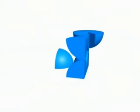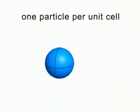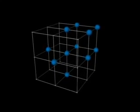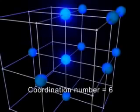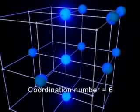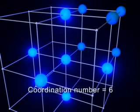We find the number of particles in one unit cell by combining all the particles' portions. In the simple cubic unit cell, eight corners, each of which is one-eighth of a particle, combine to give one particle. A key feature of a crystal structure is its coordination number — the number of nearest neighbors surrounding each particle. In a simple cubic array, any given particle has a neighboring particle above, below, to the right, to the left, in front, and in back of it, for a total of six nearest neighbors.